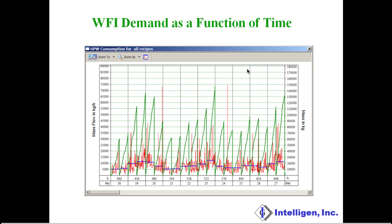Before we answer that question, let's have a look at two other types of demand that help us size the different components of the WFI system. In this chart, we see the cumulative and the average demand for a certain time interval for WFI. The green line represents the cumulative demand, which corresponds to the right-hand side axis in kilograms, and the blue line represents the average demand. A time interval of 12 hours was chosen for both of these demands. The red line represents the instantaneous demand.